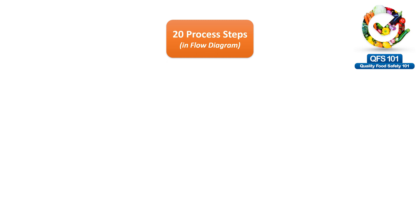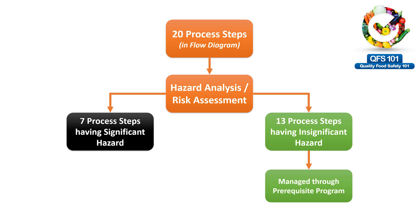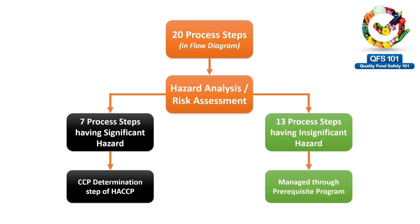Let's start with a quick recap. In our process flow diagram we arrange all our process steps in a sequential manner. Let's suppose there were 20 steps in our process flow. Those steps after verification went into the hazard analysis where we distinguish between significant and insignificant hazards. The insignificant hazards are going to be controlled through our prerequisite programs or control measures. The significant hazards go into the next step of CCP determination or the CCP decision tree.